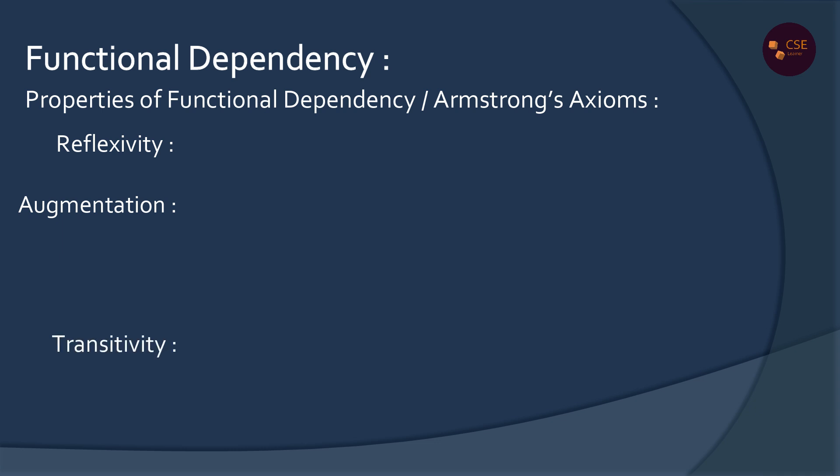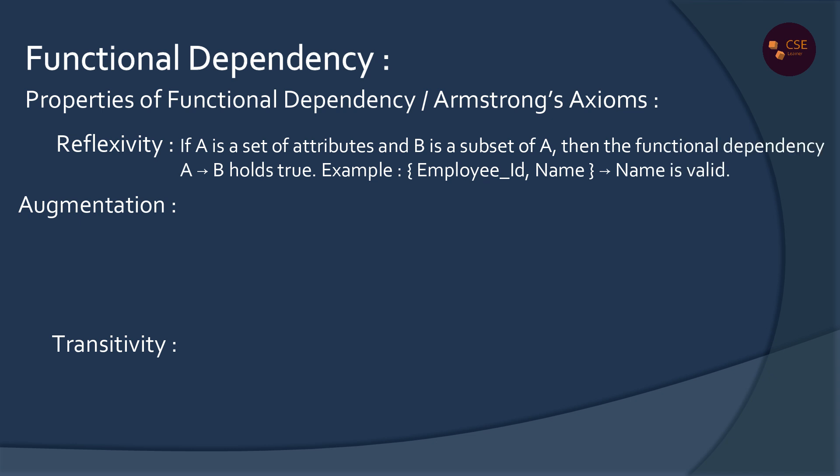First, Reflexivity. Reflexivity means A is one set of attributes and B is another set of attributes. If B is a subset of A, then A determines B is true. That means if B is a subset of A, then A determines B is true.